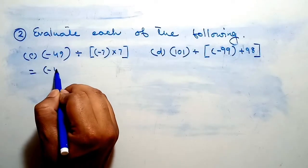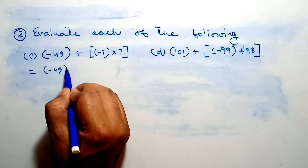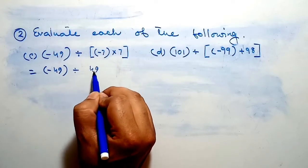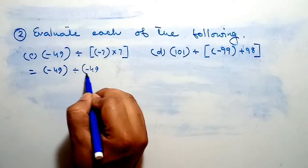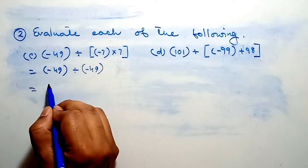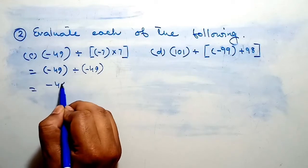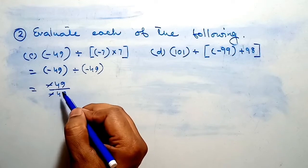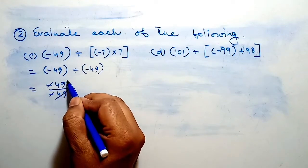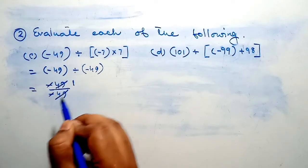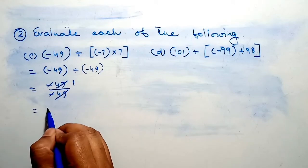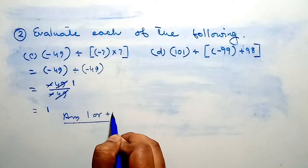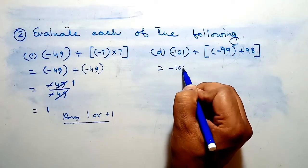Here we write minus 49 divided by 7. 7 into 7 equals 49. Plus and minus became minus, so finally we write 49 divided by minus 49. This minus and this minus cancel. When we divide 49 by 49 we get 1. Therefore our answer is 1, or positive 1.